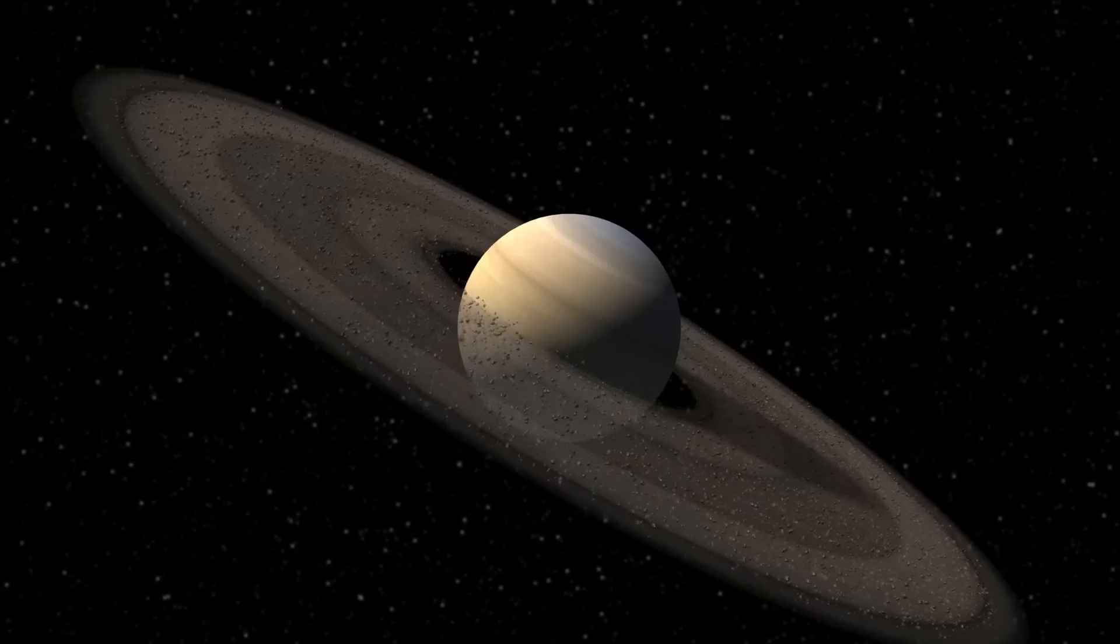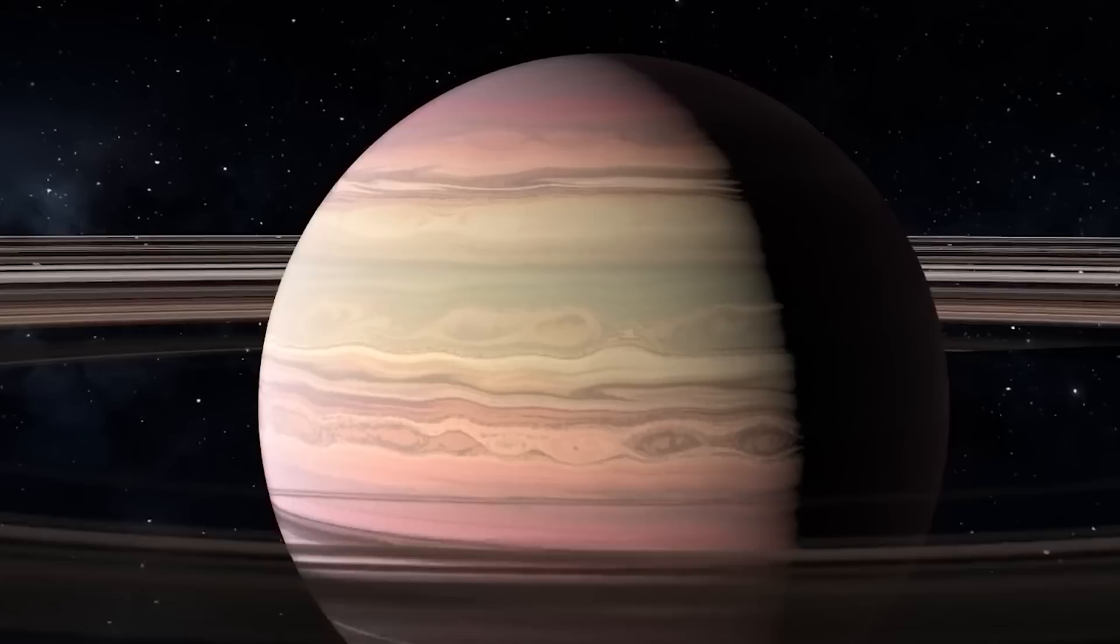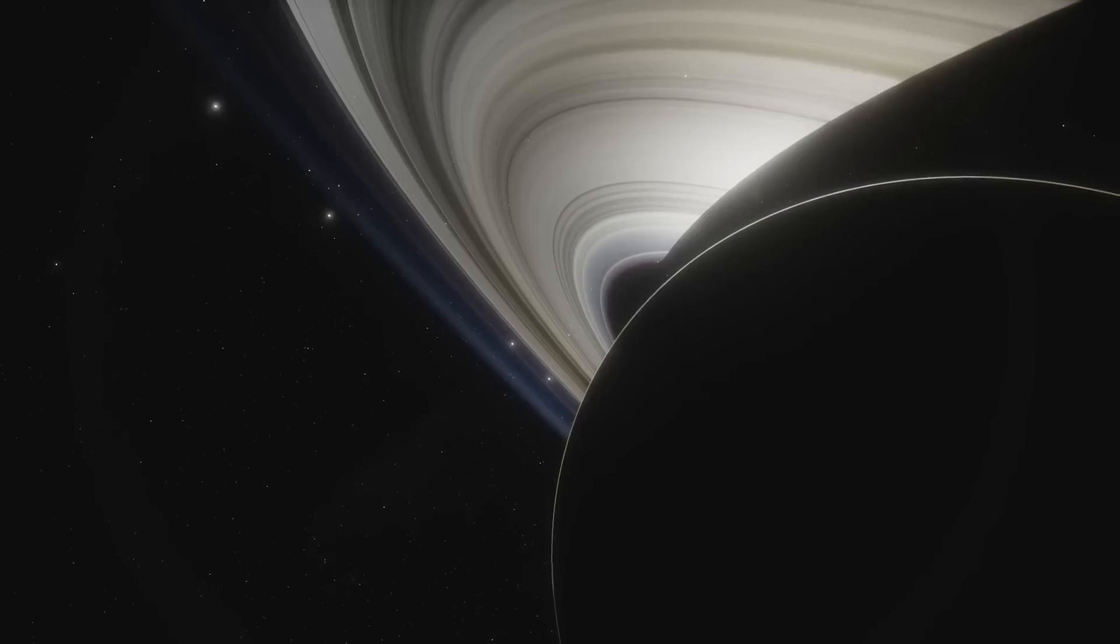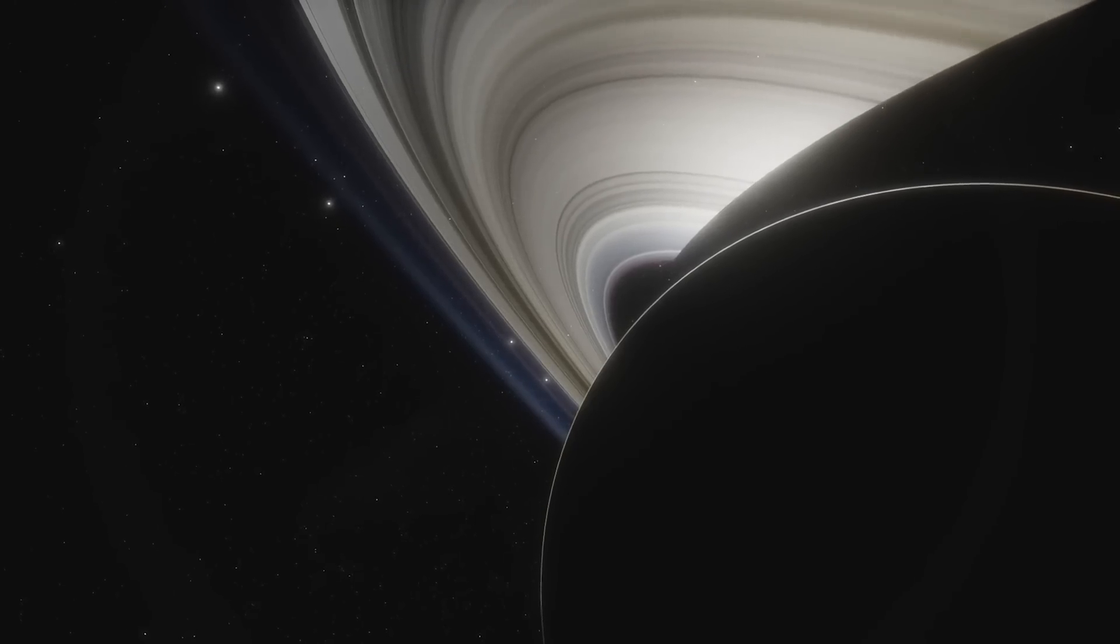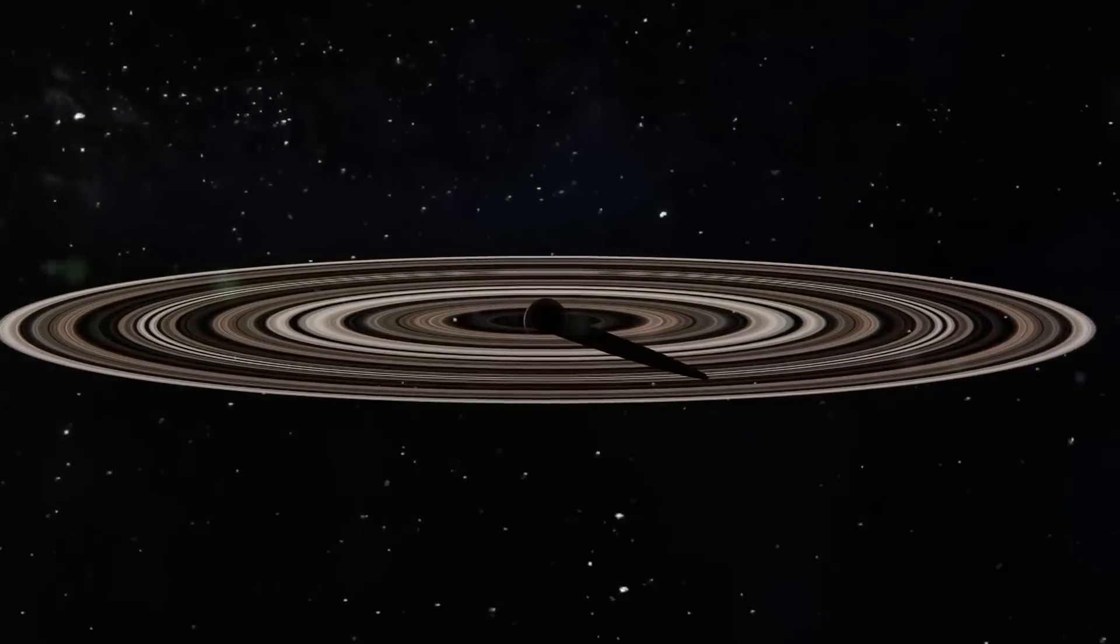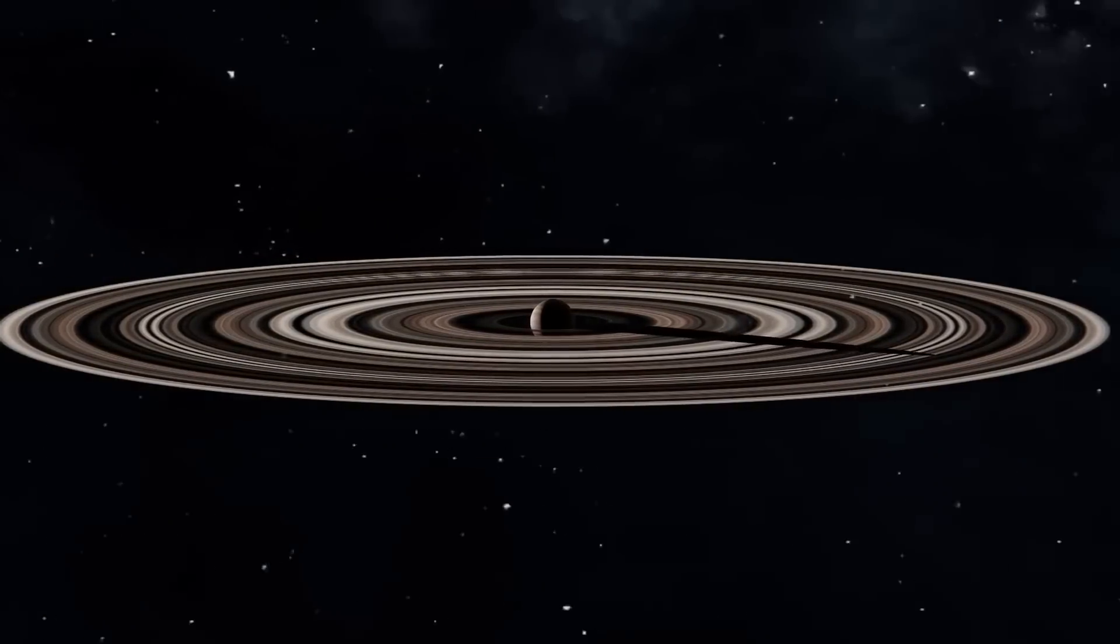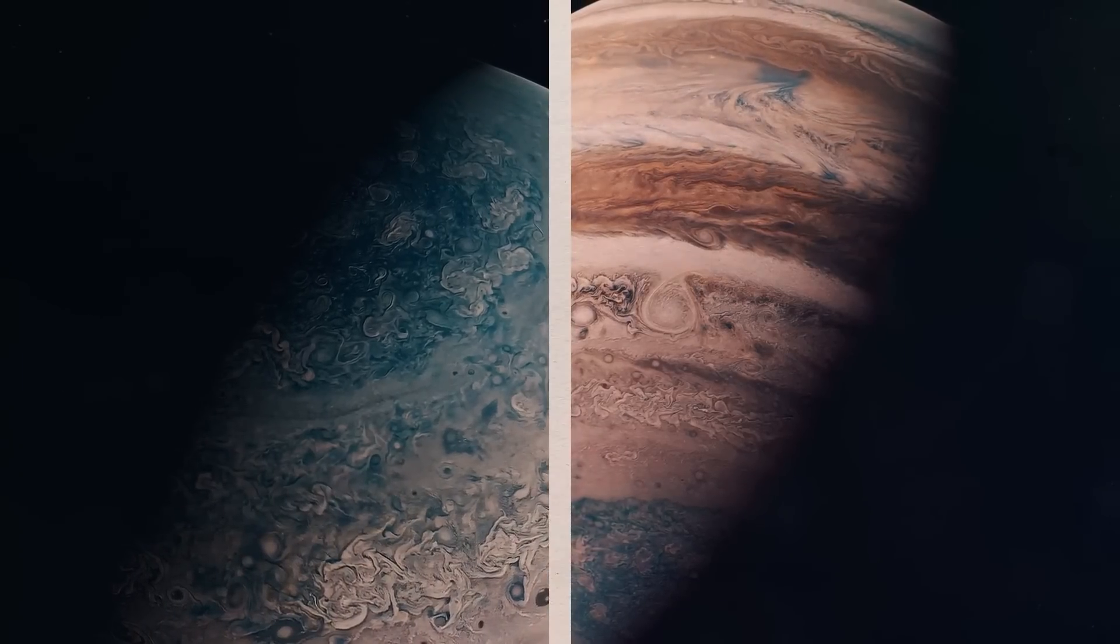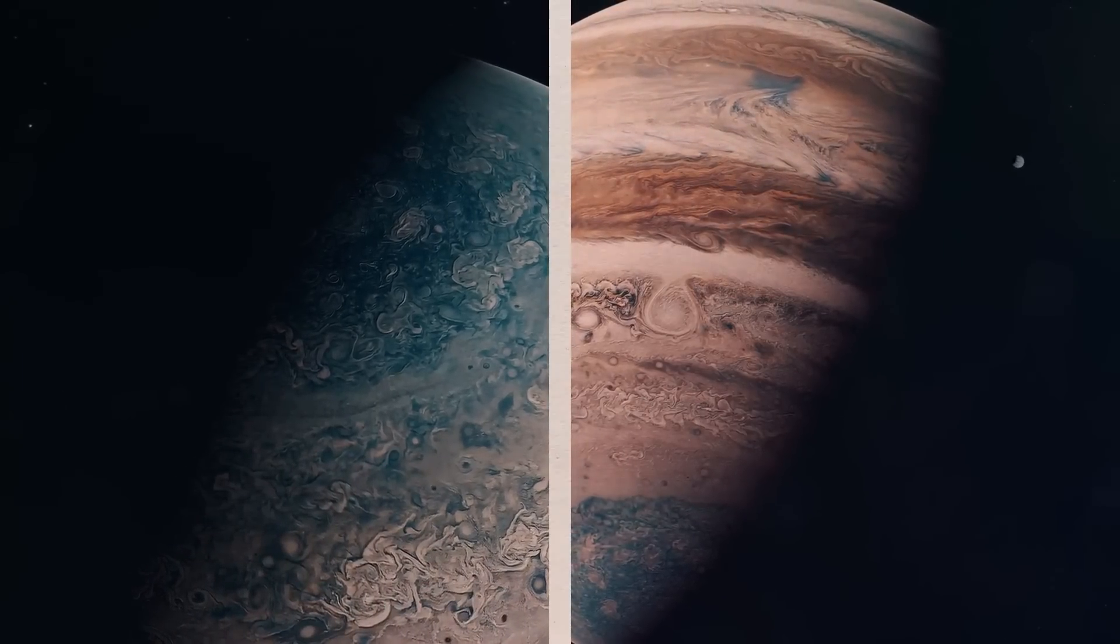One of the strangest planets that has ever been found is J1407b. This is Saturn on steroids, around 434 light-years from Earth. Astronomers studied this unsettling environment and attempted to properly calculate its mass. However, it is estimated to be between 10 and 40 Jupiter masses.